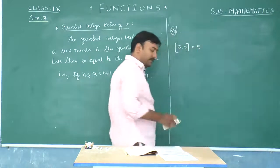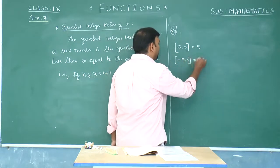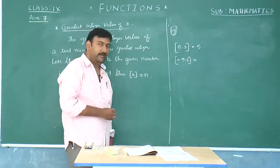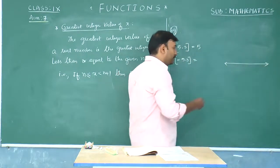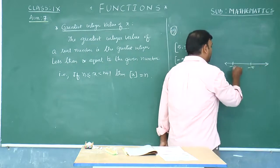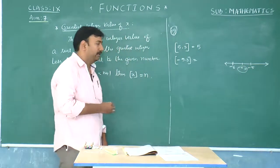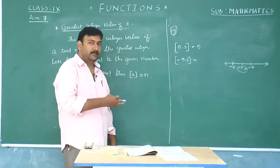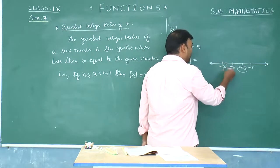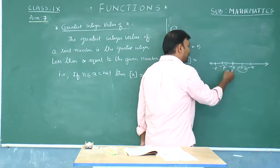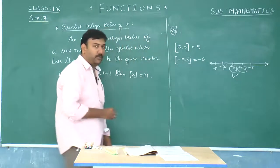Now let us check another example: what is the greatest integral value of minus 5.3? You have to be very careful with negative numbers. Minus 5.3 lies between minus 5 and minus 6. Among all integers less than minus 5.3, the greatest integer is minus 6. So the greatest integral value of minus 5.3 is minus 6.